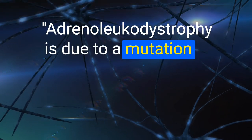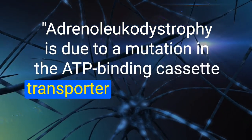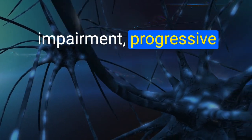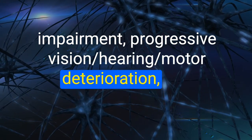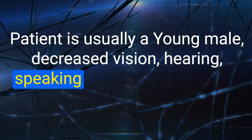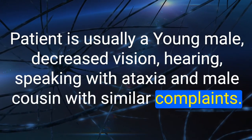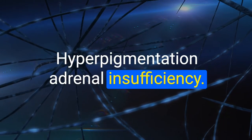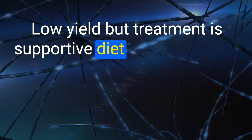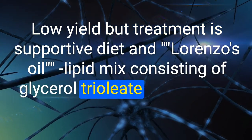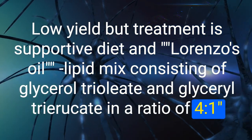138. Adrenoleukodystrophy is due to a mutation in the ABC (ATP-binding cassette) transporter and presents in young males with cognitive impairment, progressive vision, hearing, and motor deterioration, and adrenal insufficiency. Treatment is supportive diet and Lorenzo's oil — a lipid mix consisting of glycerol trioleate and glycerol trierucate in a ratio of 4:1.